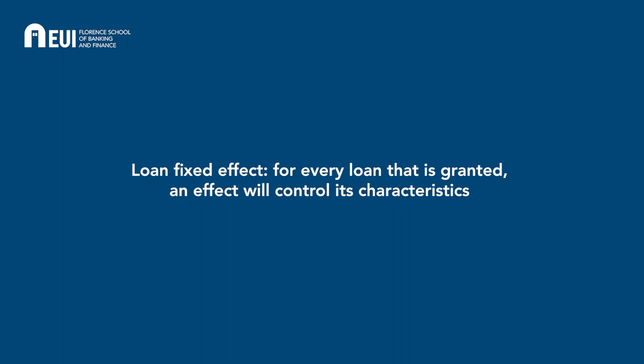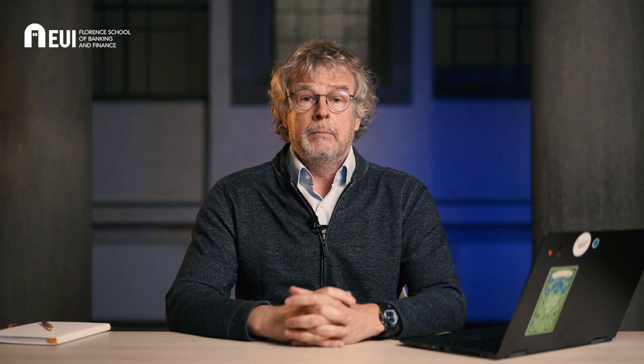What that enables is the introduction in empirical specification of a loan fixed effect, meaning that for every loan that is granted, there is an effect that is going to control for all the characteristics of the loan, including who's on the demand side — the borrower. What this loan fixed effect does in a regression is it enables us to start taking steps towards identifying what is coming from the supply side, from the credit supply side, meaning the banks deciding on the share that they're going to take in the individual loan.